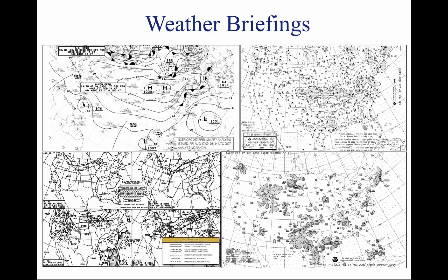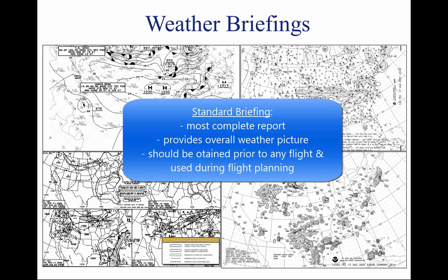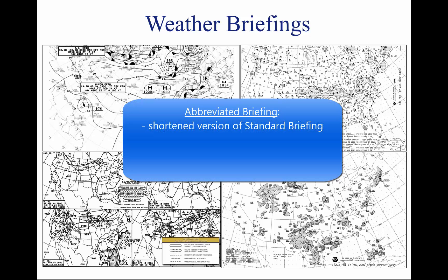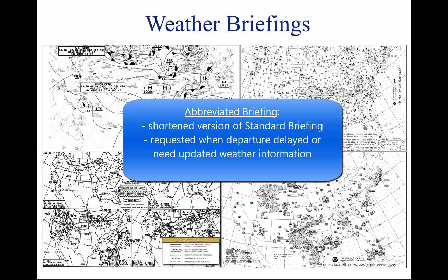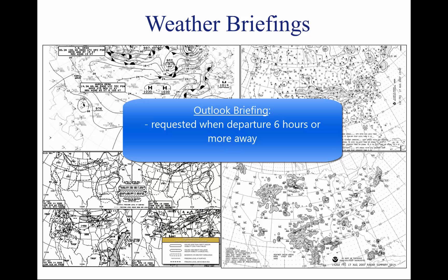A standard briefing is the most complete report and provides the overall weather picture. This type of briefing should be obtained prior to the departure of any flight and should be used during flight planning. An abbreviated briefing is a shortened version of the standard briefing, requested when a departure has been delayed or when weather information is needed to update the previous briefing. An outlook briefing should be requested when a planned departure is six hours or more away, and provides initial forecast information limited in scope due to the time frame of the planned flight.